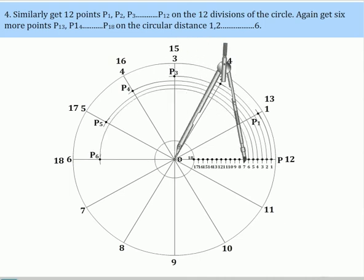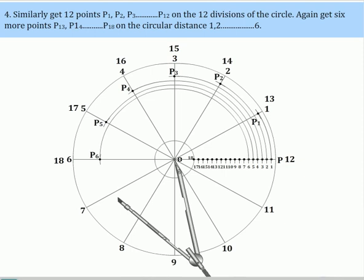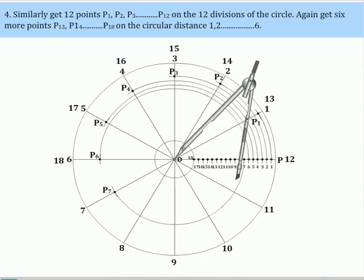Again, get 6 more points P13, P14 and up to P18 on the circular distance 1, 2, etc. up to 6.